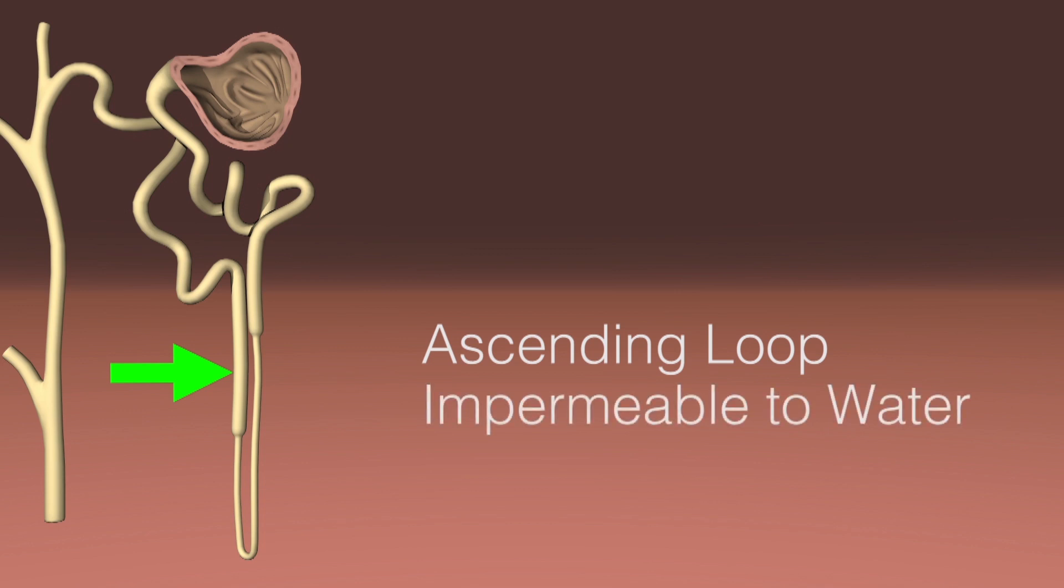The ascending limb, especially the thick segment, however, is the opposite. It's impermeable to water, but will use energy to actively pump ions like sodium and chloride out of the tubule into the interstitium of the medulla. When it does this, it creates a hypertonic environment around it.